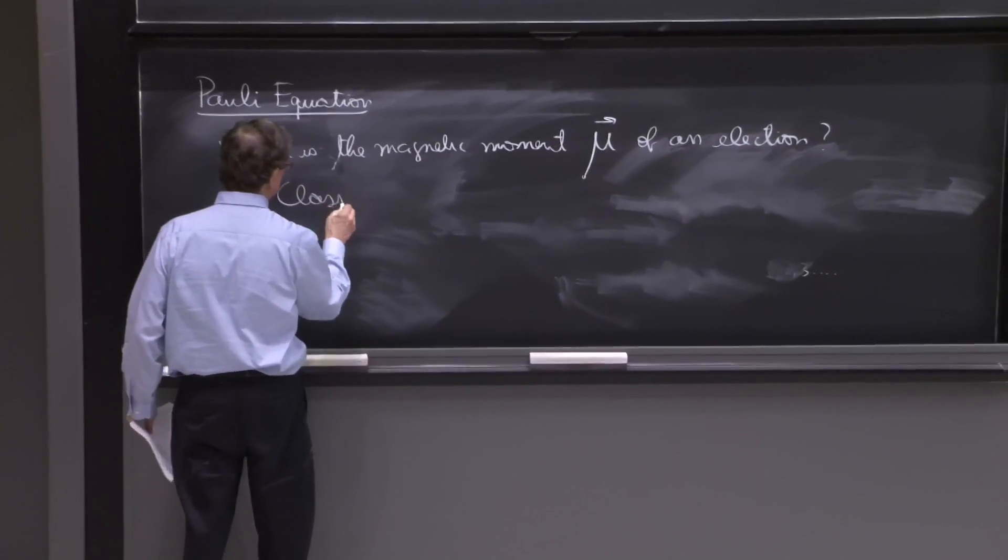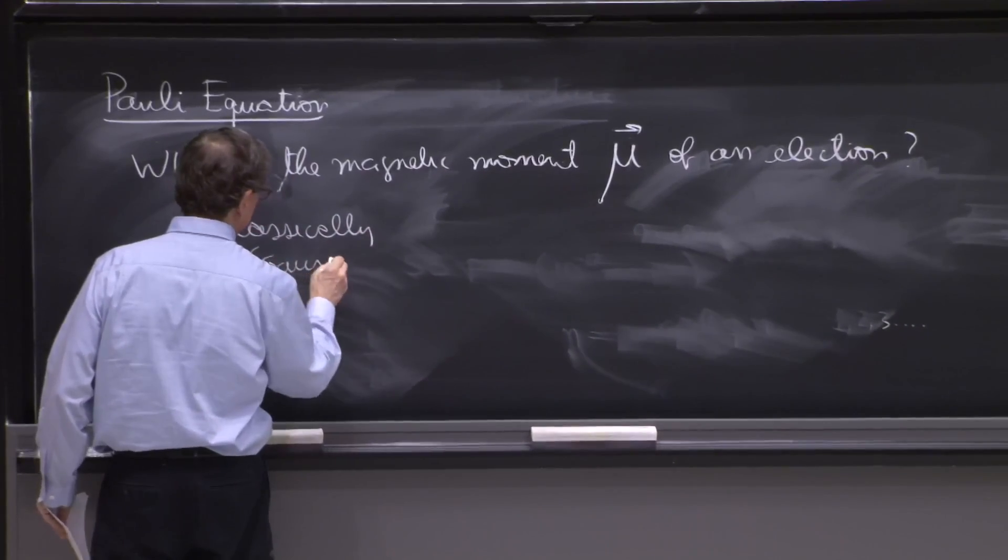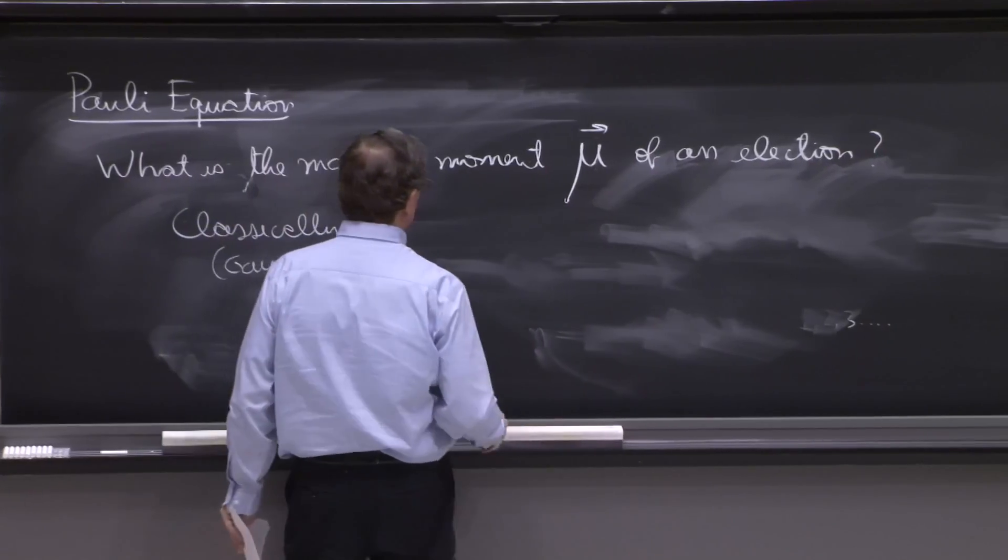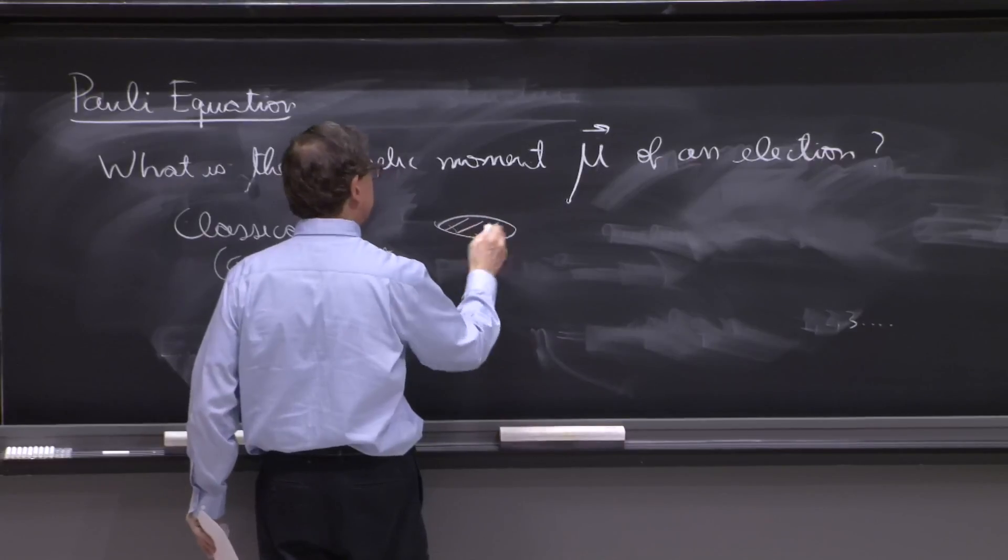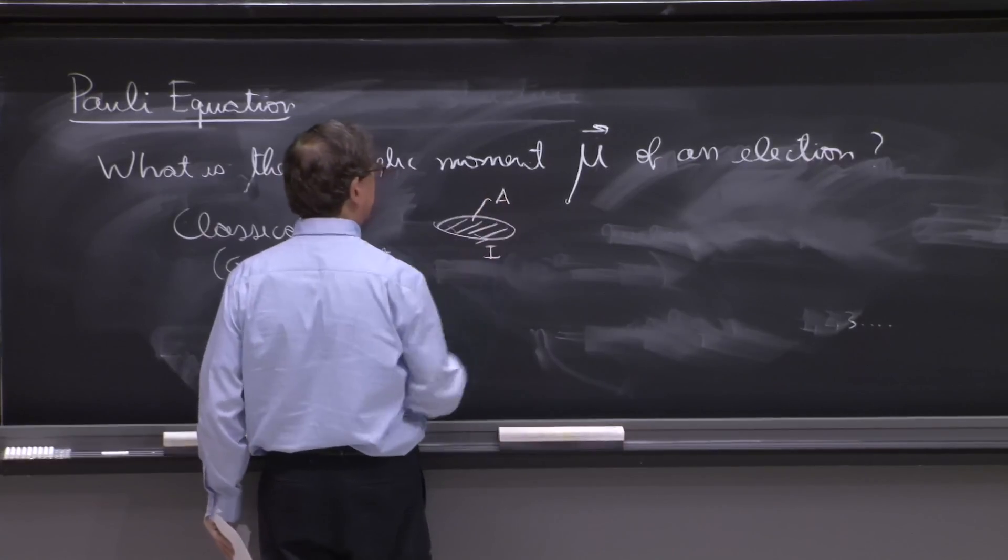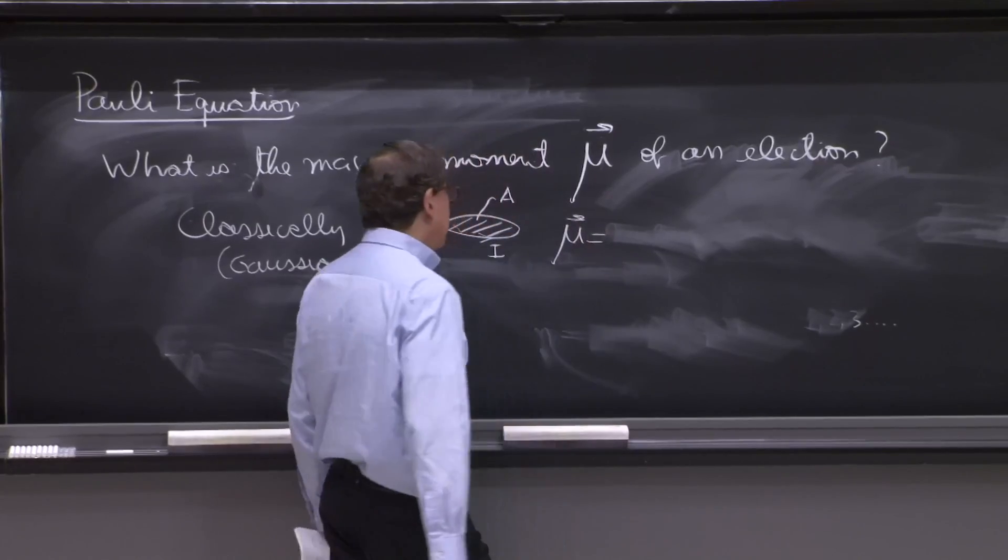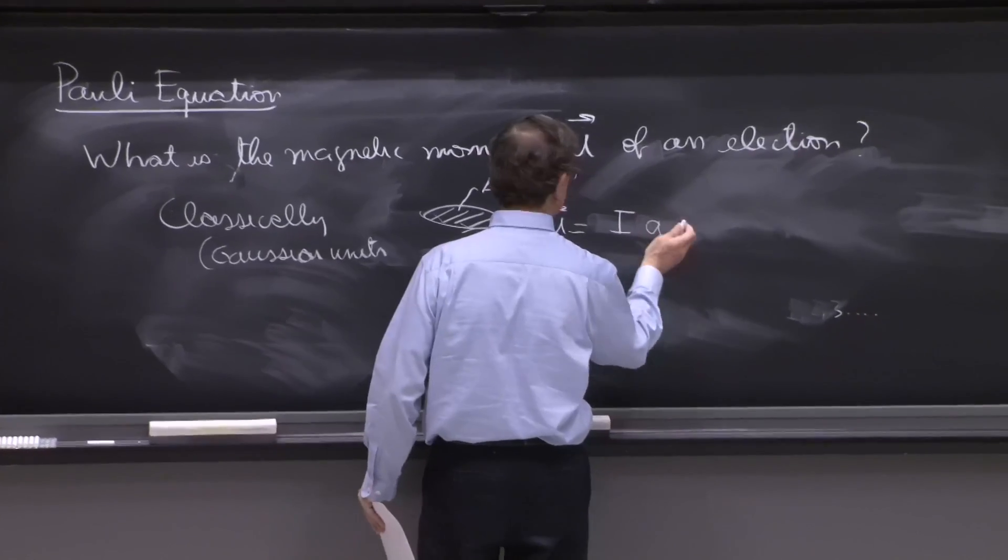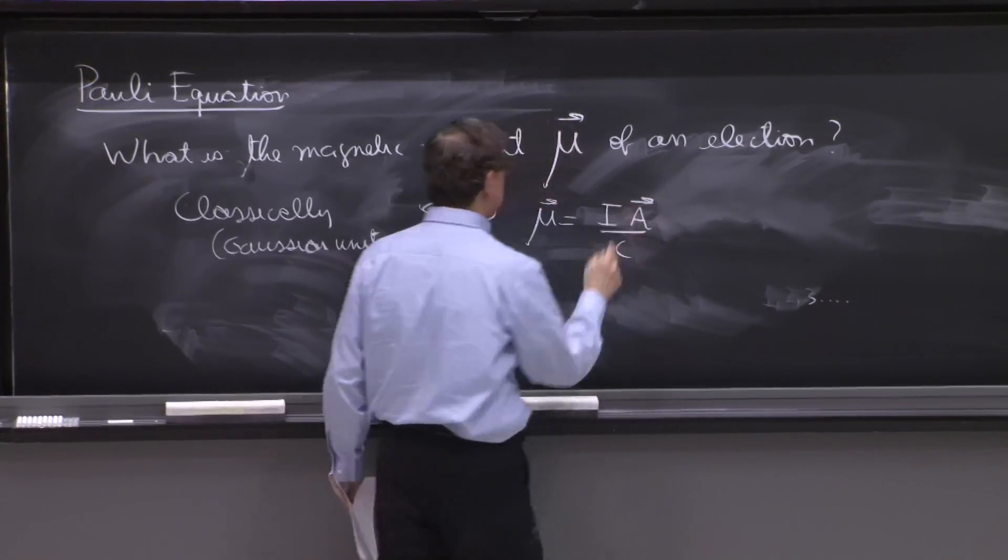So classically, in Gaussian units, if you have a current loop and an area a, the magnetic moment is equal to i times the area vector divided by c.